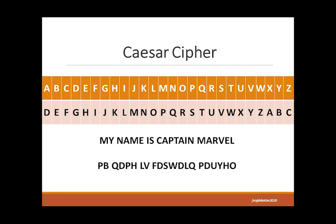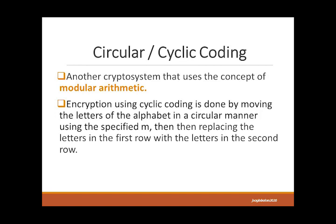A second cryptosystem is called circular or cyclic coding. This system uses modular arithmetic and, same as Caesar Cipher, moves the letters forward after the number of placement is identified in a cyclic manner.